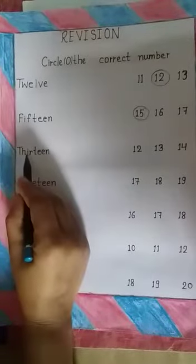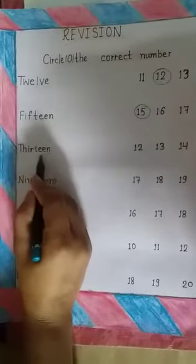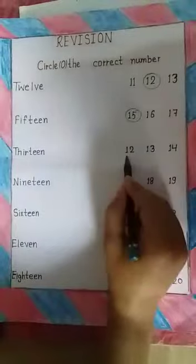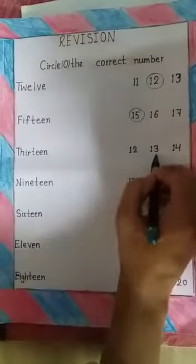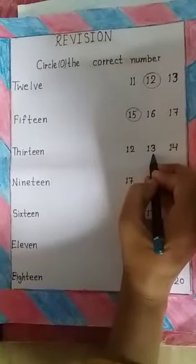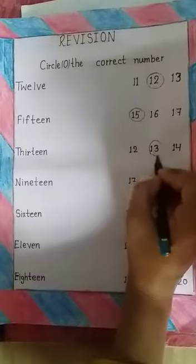T, H, I, R, T, E, E, N — thirteen. 13. Where is 13? So we will circle 13.